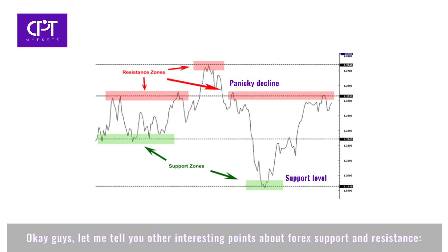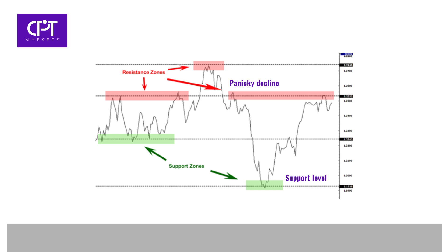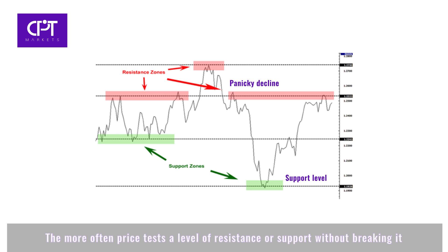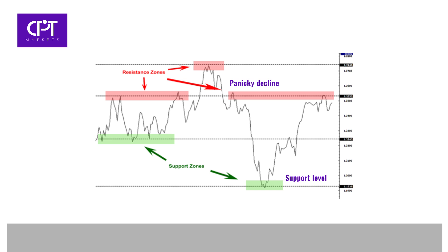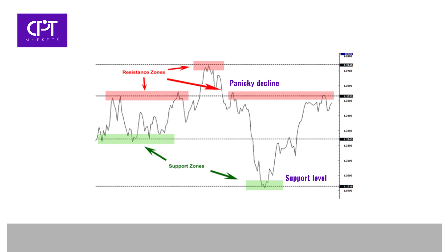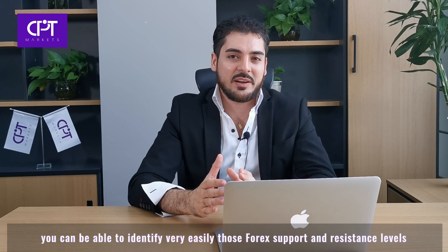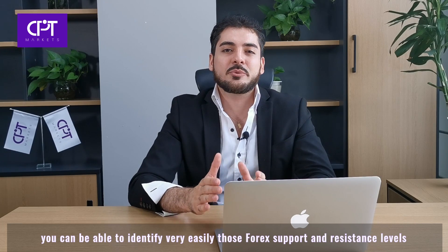Let me tell you other interesting points about forex support and resistance. First, when the price passes through resistance, that resistance could potentially become support. The more often the price tests a level of resistance or support without breaking it, the stronger that area is. When a support or resistance level breaks, the strength of the follow-through move depends on how strongly the broken support or resistance had been holding. With just a little practice, you can easily identify forex support and resistance levels.